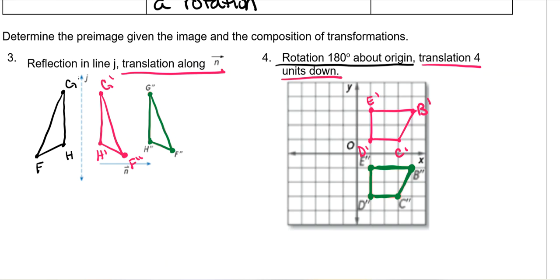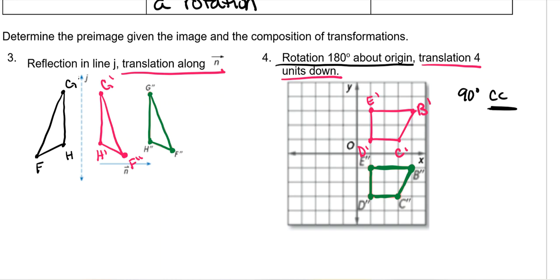Then the original was a rotation of 180 degrees about the origin. There's no opposite direction needed for 180 degrees because it's the same no matter which way you turn. However, if it had been 90 degrees clockwise, you'd do 90 degrees counterclockwise to reverse it. The degree stays the same but the direction switches. For 270 degrees clockwise, the opposite would be 270 degrees counterclockwise.